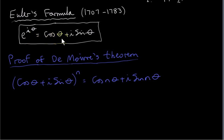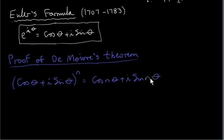Now that we've established Euler's formula and we believe it's true for any theta in radians, we can easily prove De Moivre's theorem. De Moivre's theorem states that cos theta plus i sine theta to the power of n equals cos n theta plus i sine n theta, where n is any real or even complex number.